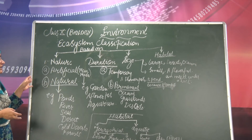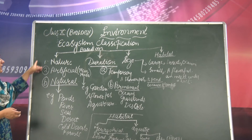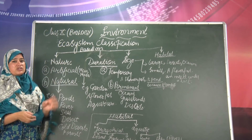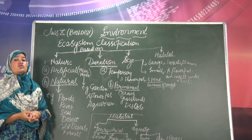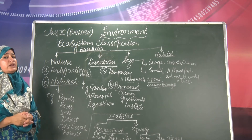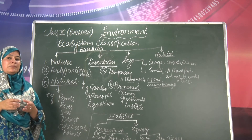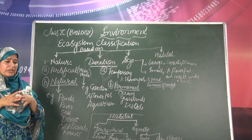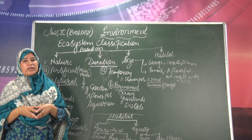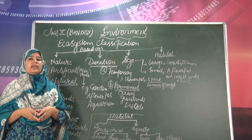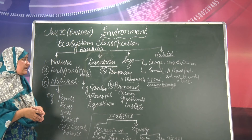So that is all about ecosystem classification. The next topic we will study is the components of ecosystem. When we defined ecosystem, we studied that it has two components: one is biotic and the other is abiotic.